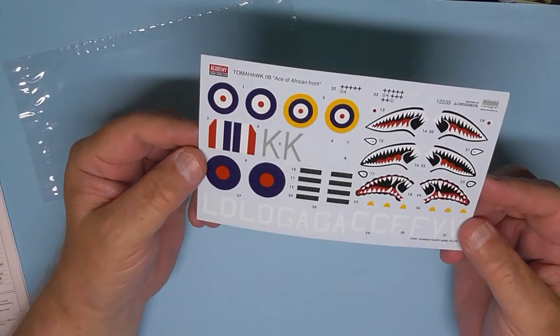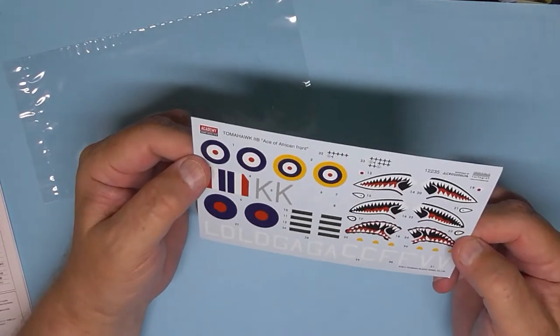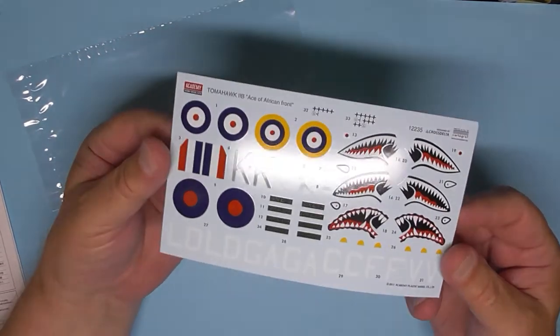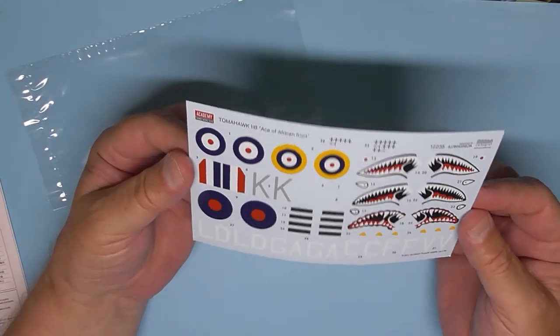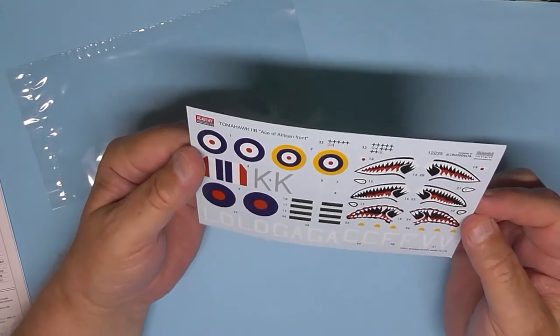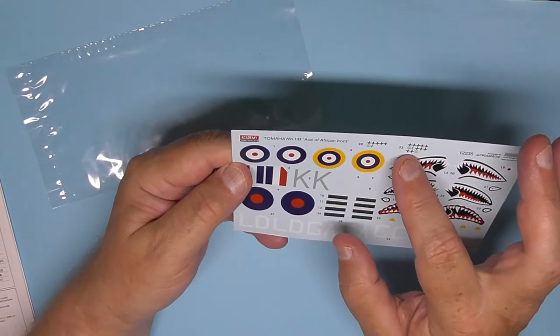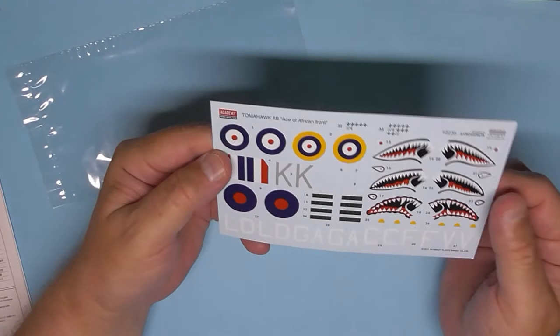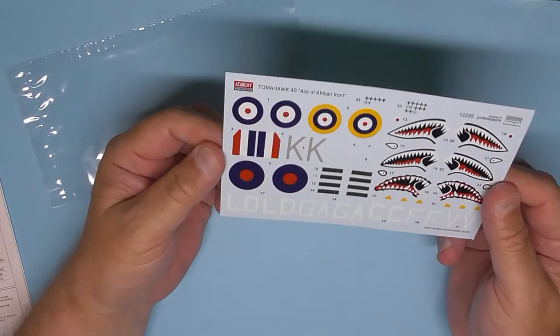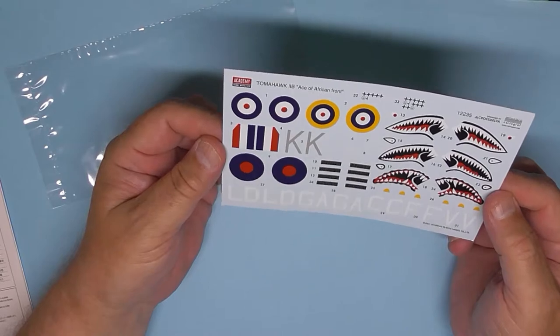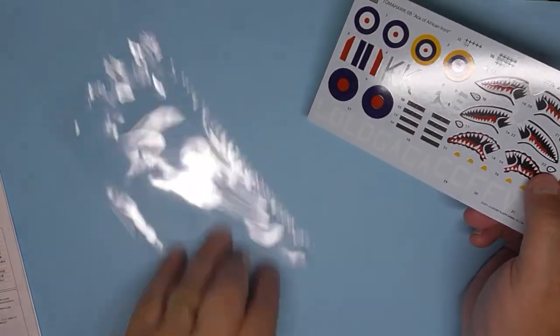And then you've got the decals or transfers as I like to call them. Oh wow, they're glossy, they feel a bit thick, they're made by Cartograph so they shouldn't give you any problem whatsoever. You got some kill markings as well, Italian aircraft as well as German. And you can't beat a desert Tomahawk, can you?